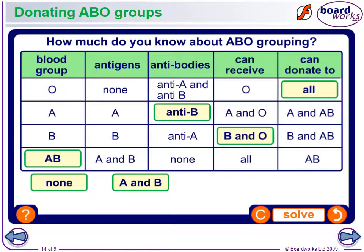Blood group O: no antigens, has anti-A and anti-B antibodies, can receive O, and can donate to everyone. Blood group A: has antigen A, antibodies against B, can take A and O, and can donate to A and AB. Blood group B: has antigen B, has anti-A antibodies, can receive B and O, and can donate to B and AB. Blood group AB: has antigens A and B, has no antibodies, can take all groups, and can donate to AB only.